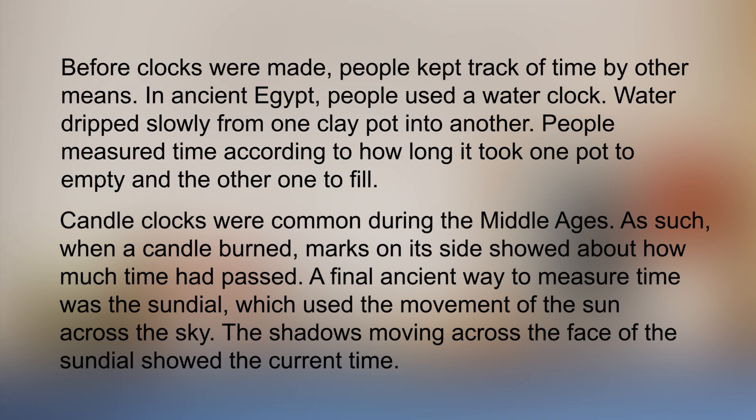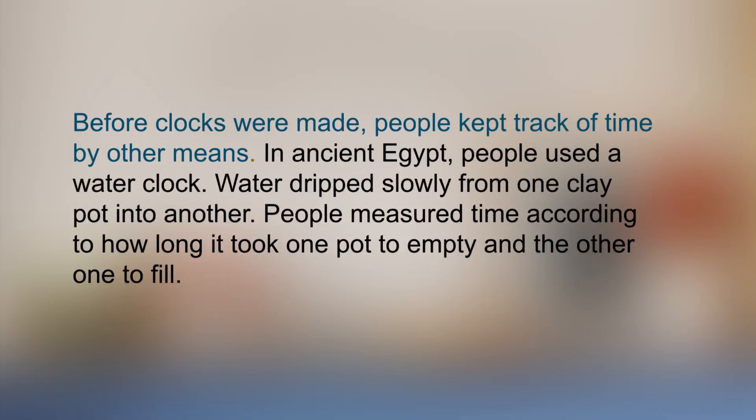So, what is the main idea? And where can it be found? We are sure you must have got it right. The main idea is: before clocks were made, people kept track of time by other means. It is found in the first sentence of the paragraph and explains the subject being discussed in the text. The author also gives us three supporting details in the form of examples that show how time was kept in ancient times: water clocks, candles, and sundials.